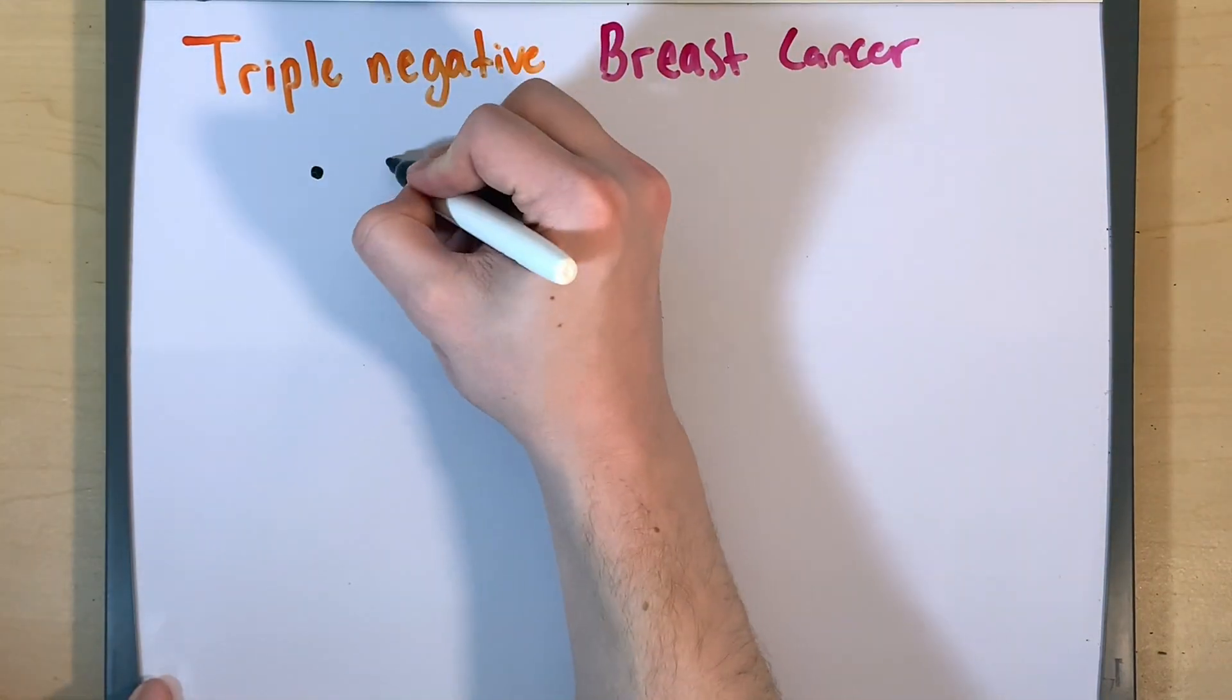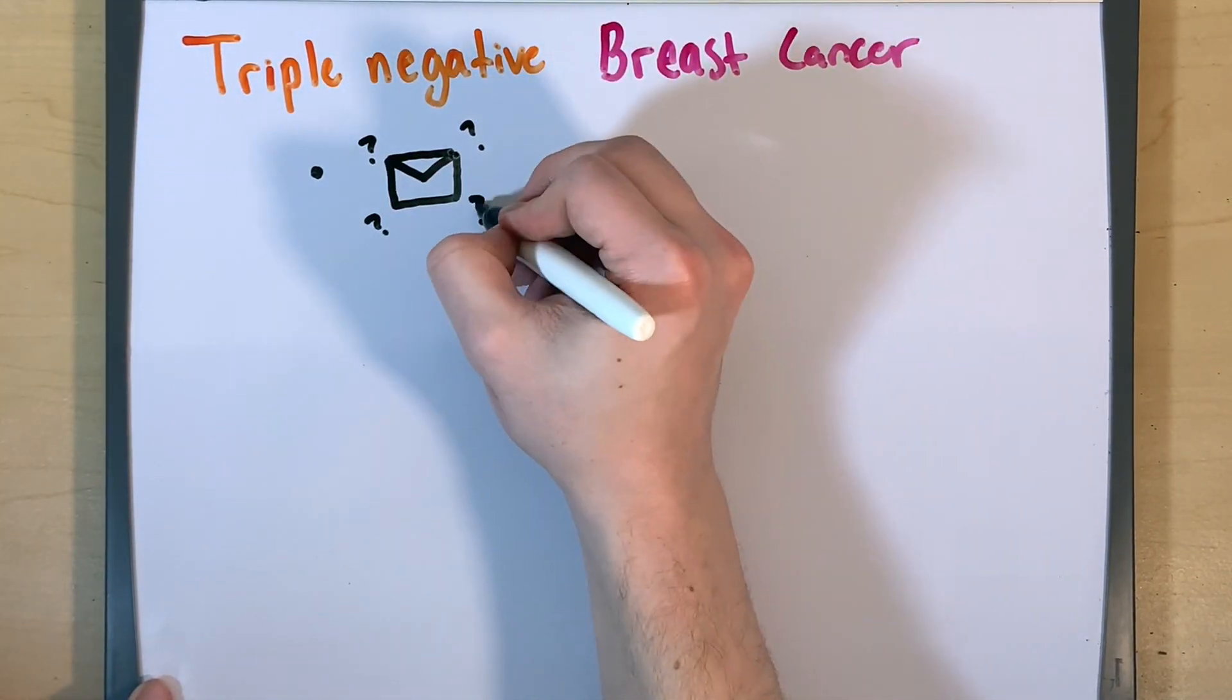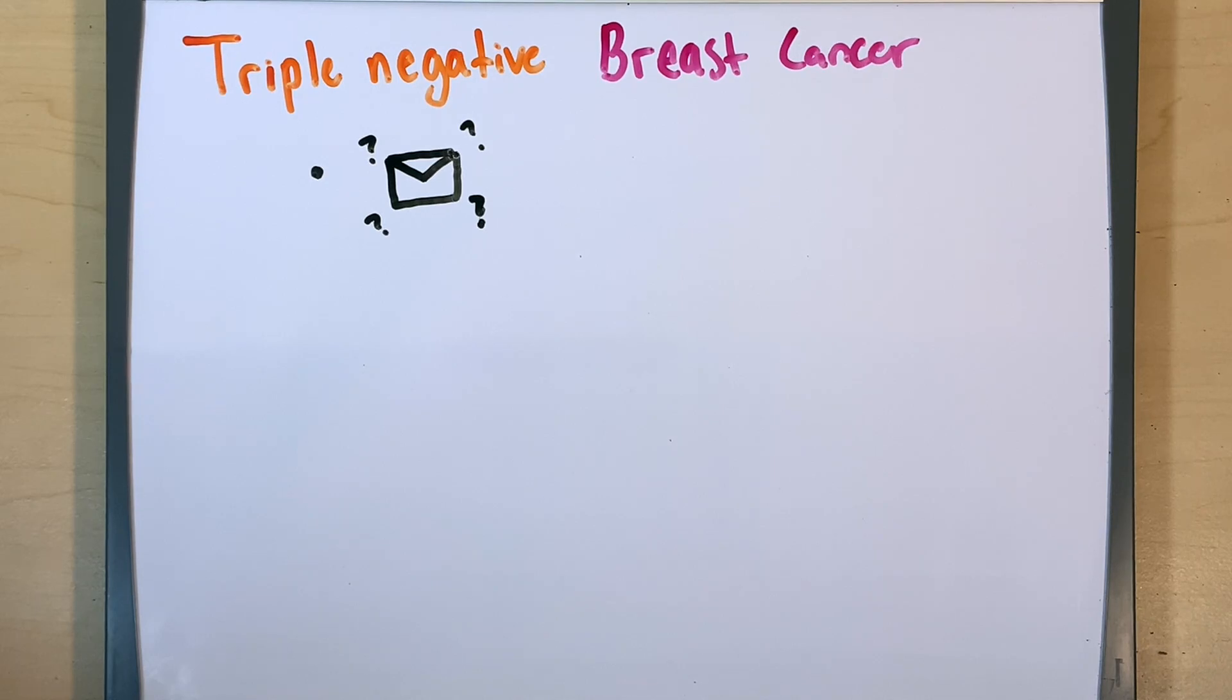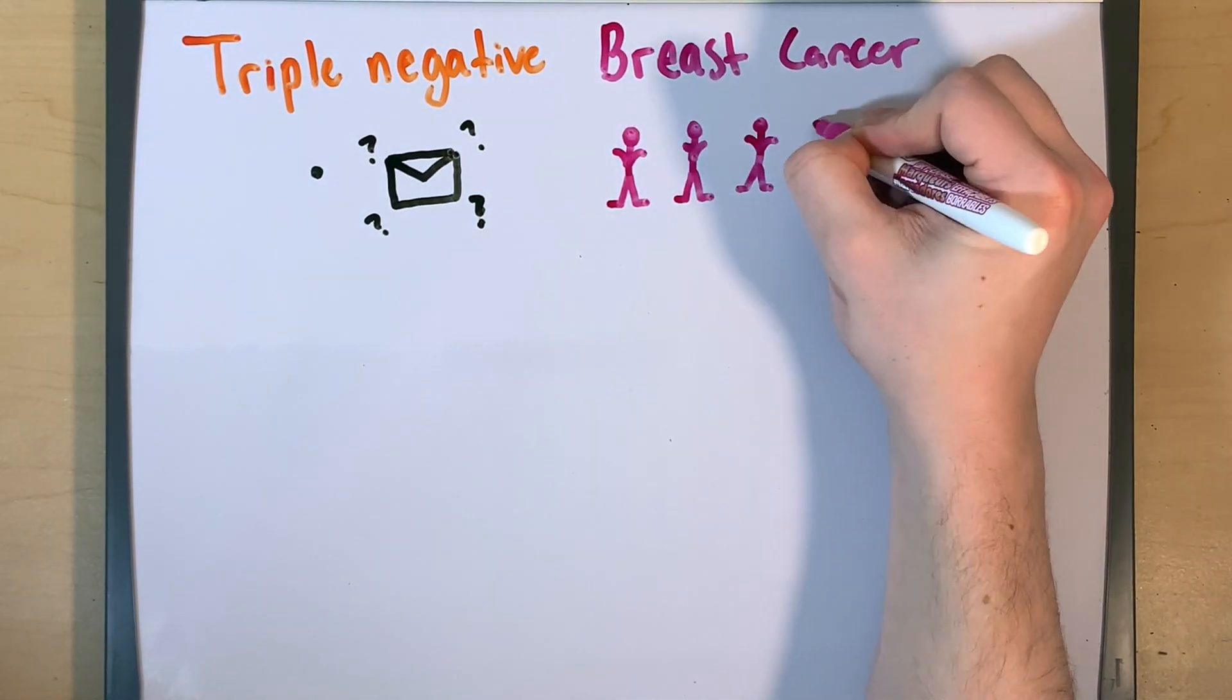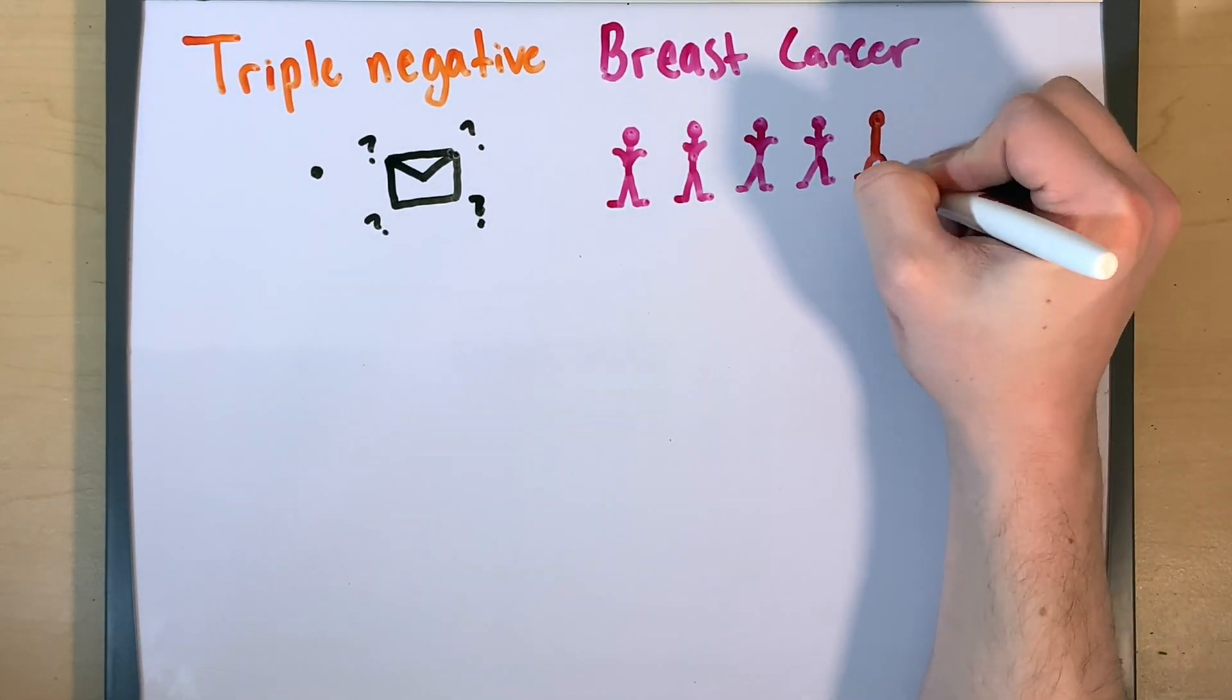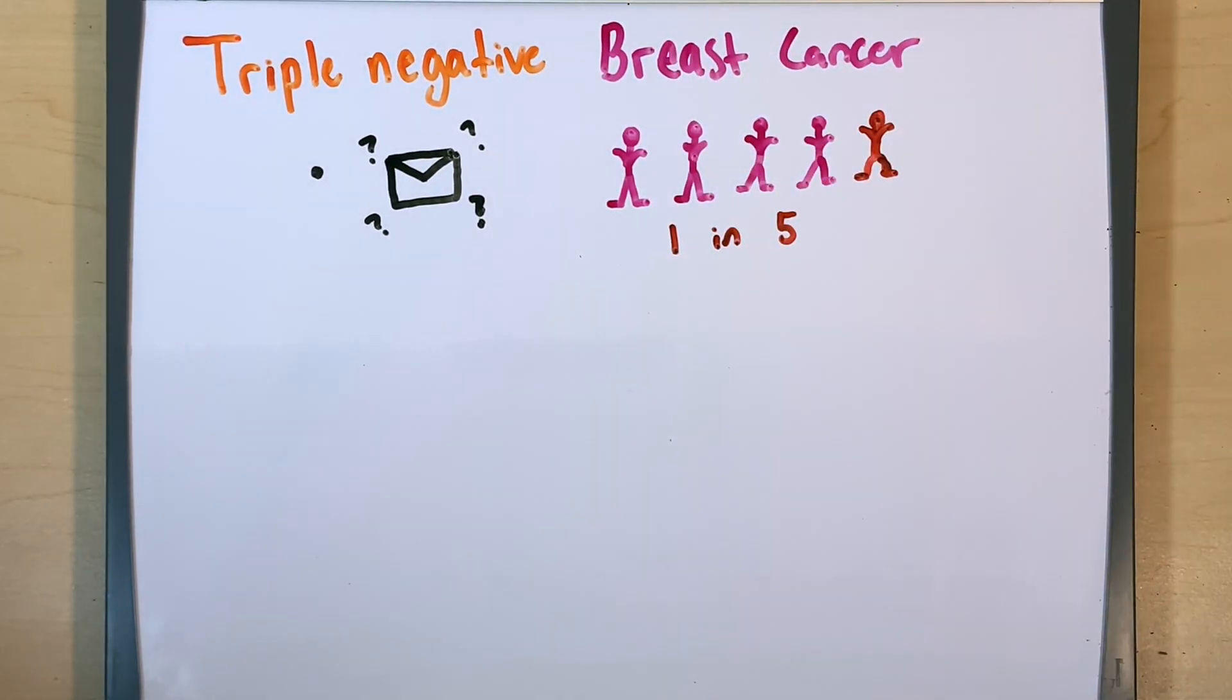Triple negative breast cancer is much more difficult to treat because it's difficult to understand where it's getting the signals it needs to grow. Unfortunately, one in five breast cancer diagnoses appear to be of the triple negative subtype.